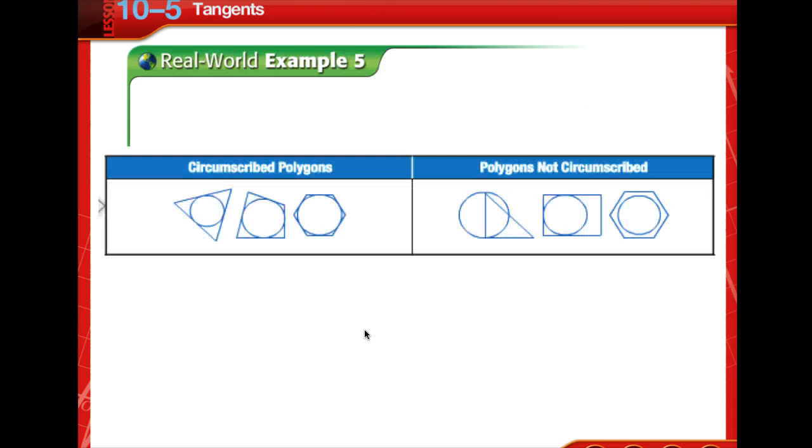Now let's talk about circumscribed polygons. A polygon is circumscribed about a circle if every side of the polygon is tangent to the circle.